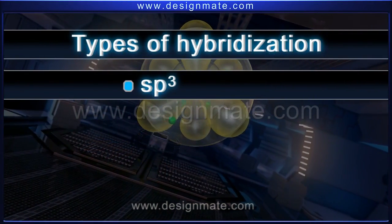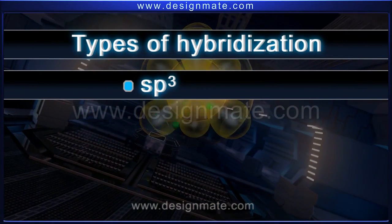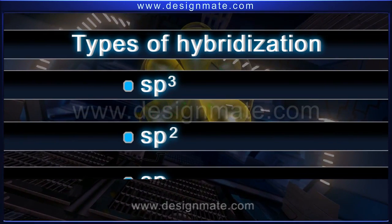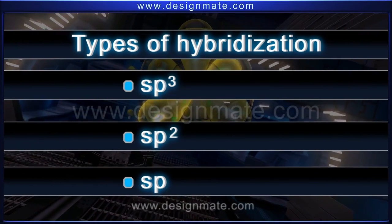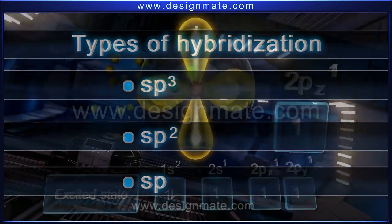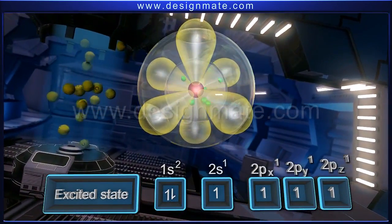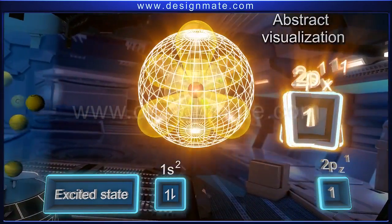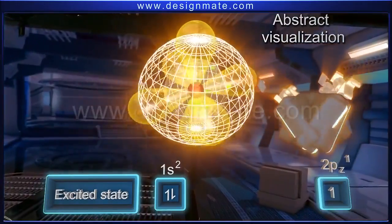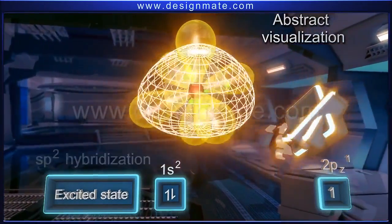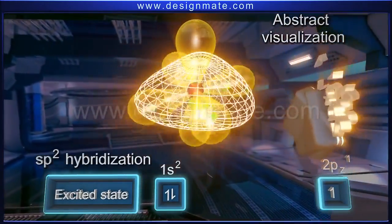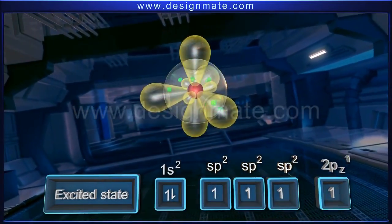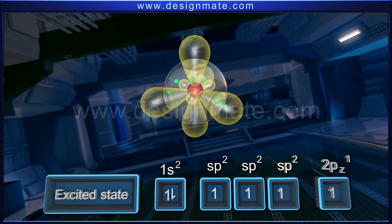Besides sp3 hybridization, the excited carbon atom may also undergo sp2 or sp hybridization. During the formation of a double bond, one 2s and two of the 2p orbitals hybridize. Consequently, this hybridization is termed as sp2 hybridization. The hybridization leads to the formation of three equienergic sp2 hybrid orbitals.